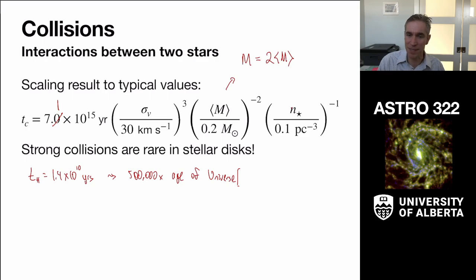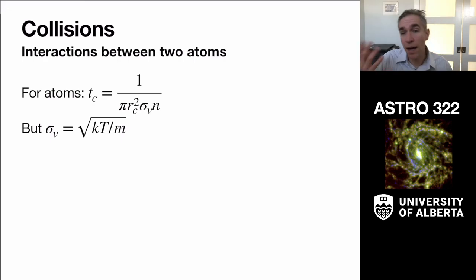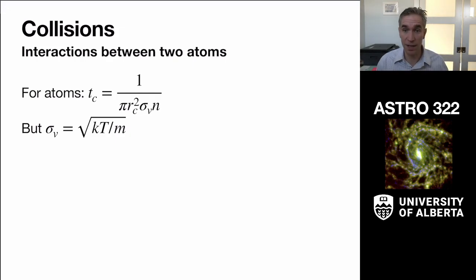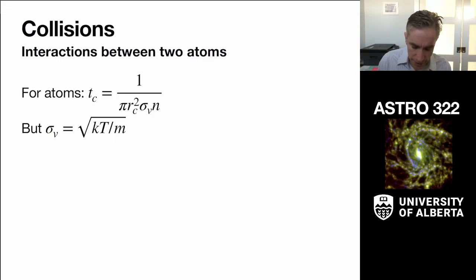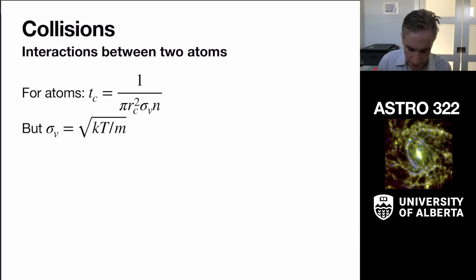As a comparison, for gas particles we get the same geometric expression for collision time, but the relevant size scale is the Bohr radius — about 10 to the minus 10 meters — since atoms collide when their electron clouds interact. Using room temperature gas at 300 Kelvin with molecular mass of 29 hydrogen masses, and a particle density from the ideal gas law of about 2 times 10 to the 25 per cubic meter, the collision time works out to about 5 nanoseconds.